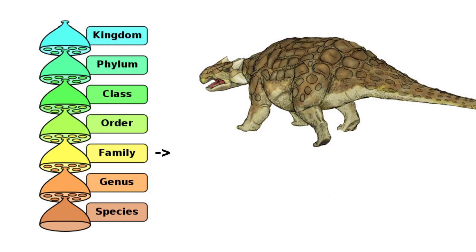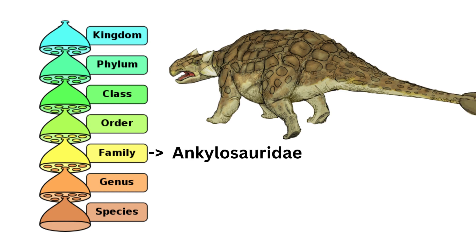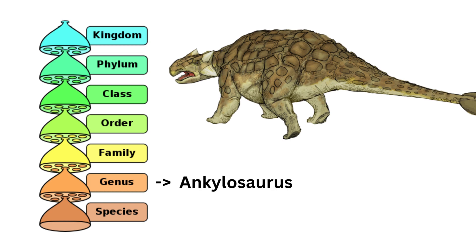Moving down the hierarchy, we arrive at the family level. Families are divisions within an order that share even more specific characteristics. The Ankylosaurus belongs to the Ankylosauridae family, along with its close relatives. Then we reach the genus level. Ankylosaurus is the genus name, which represents a more specific group within a family and comprises closely related species.